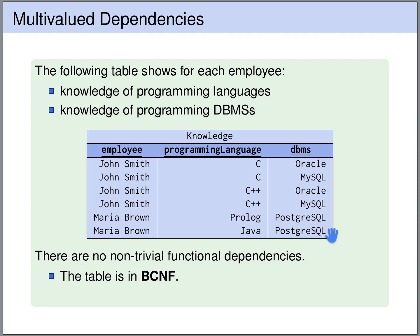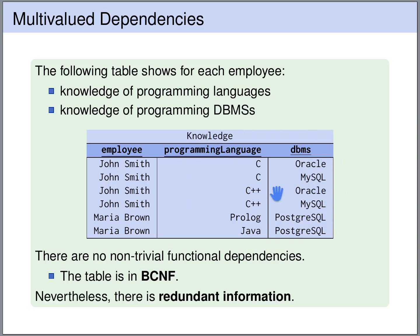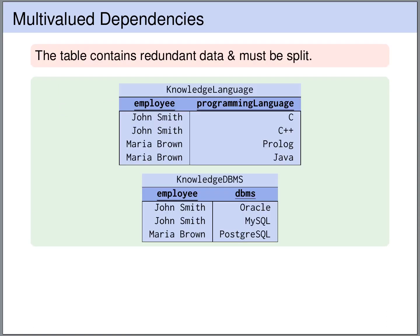Nevertheless, this table contains a lot of redundant information. We store twice that the employee John Smith knows the programming language C. We store twice that John Smith knows C++. We store twice that Maria Brown knows C++. So this table contains a lot of redundant information and it must be split into two tables: one with the knowledge of programming languages, and one with the knowledge of database management systems.